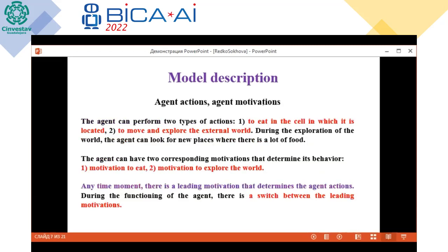Agent actions and agent motivations. An agent can perform two types of action: to eat in the cells in which it is located, and to move and explore the external world. During the exploration of the world, the agent can find new places where there is a lot of food. The agent has two corresponding motivations that determine its behavior: motivation to eat, and motivation to explore the world.